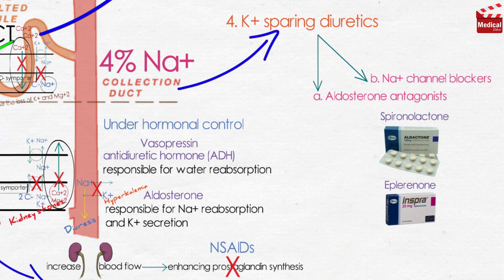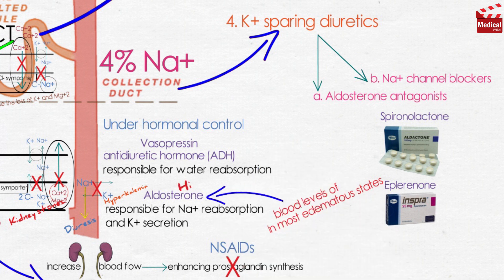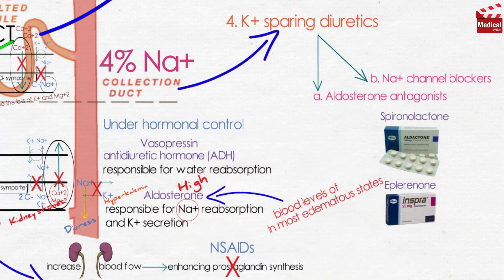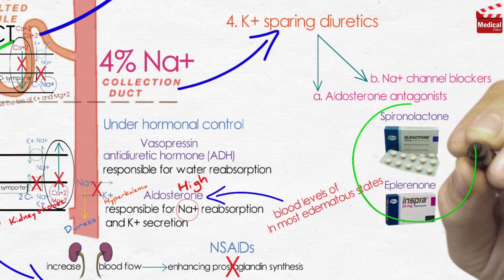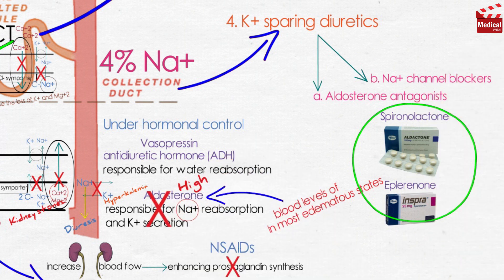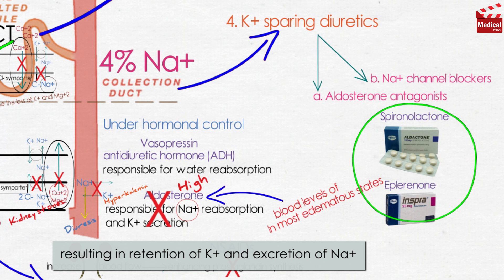You should know that in most edematous states, blood levels of aldosterone are high, causing retention of sodium. Spironolactone and eplerenone antagonize the activity of aldosterone, resulting in retention of potassium and excretion of sodium.